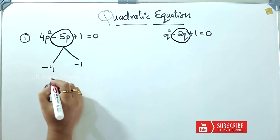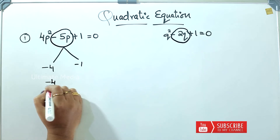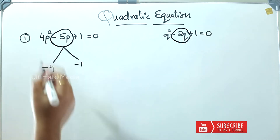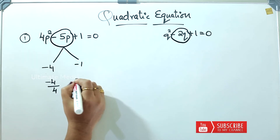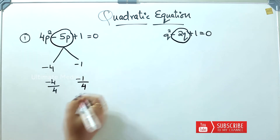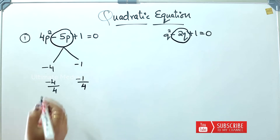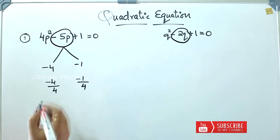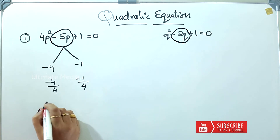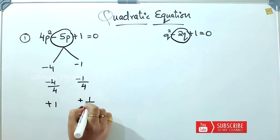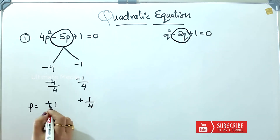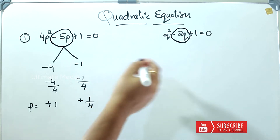Minus 4 is equal to E minus 4. So, let's write this. Minus 4 is equal to minus 4, and minus 4 divided by 4. Then p is equal to plus 1 and plus 1 by 4. That's the first thing.